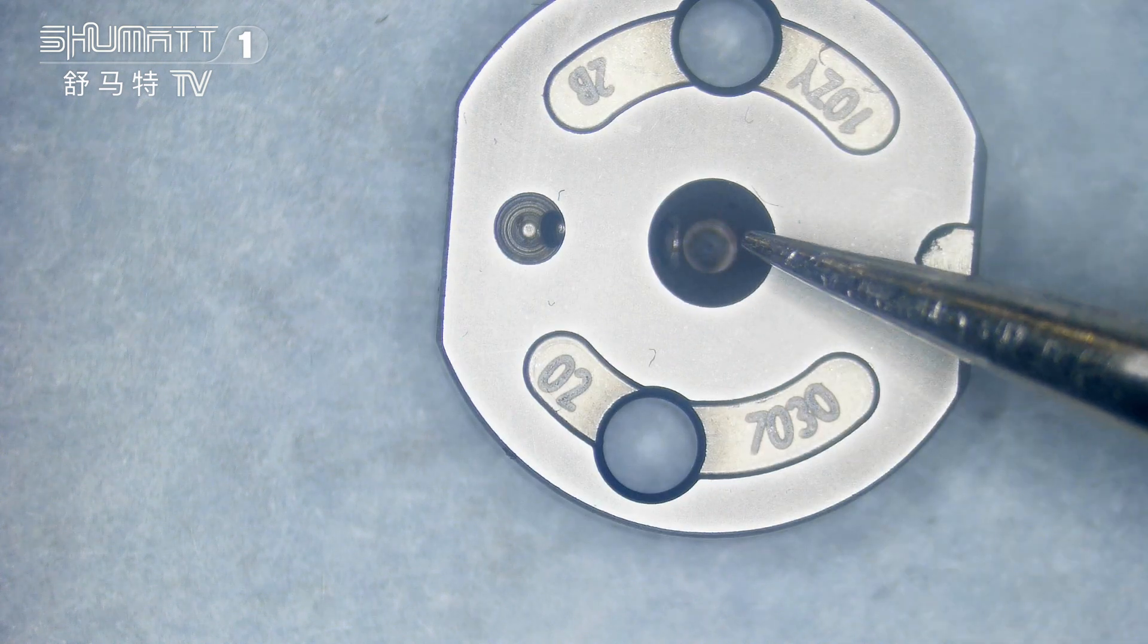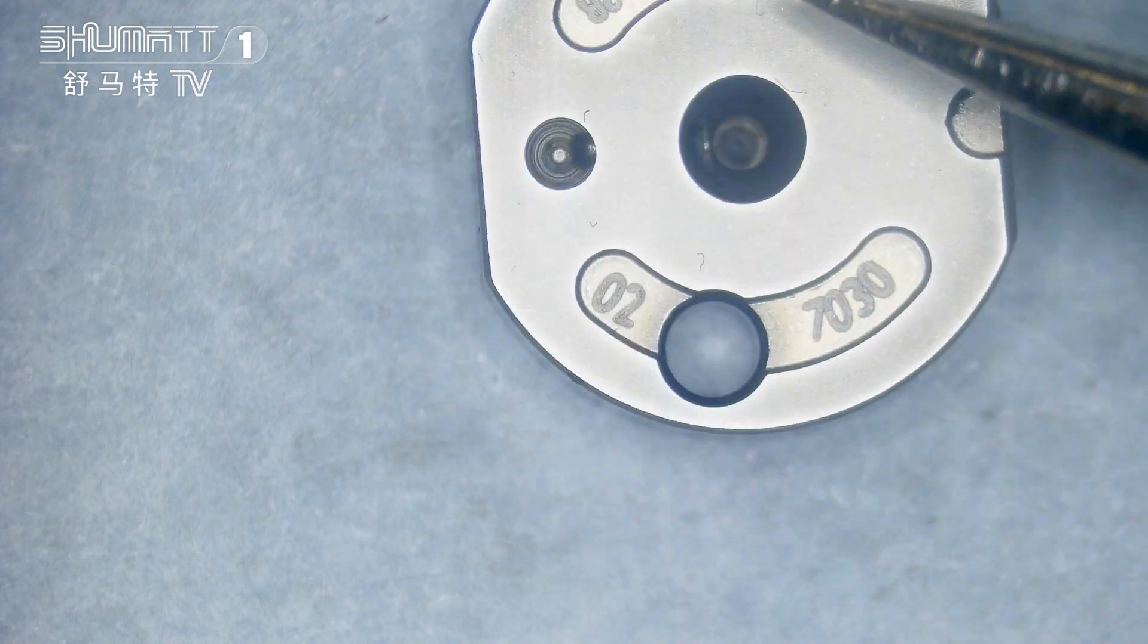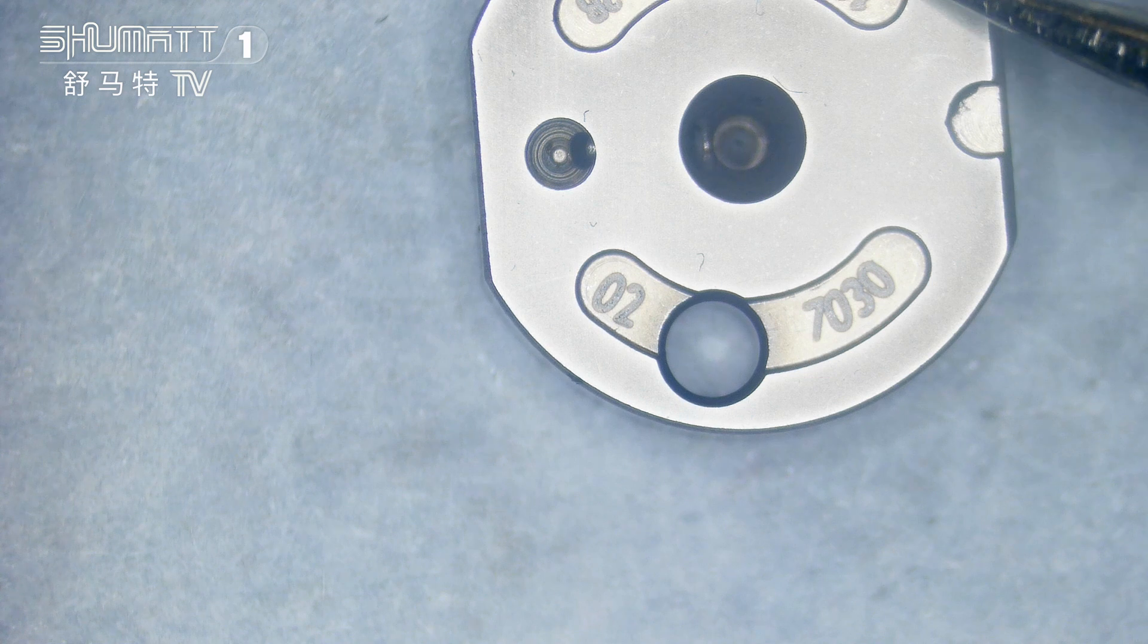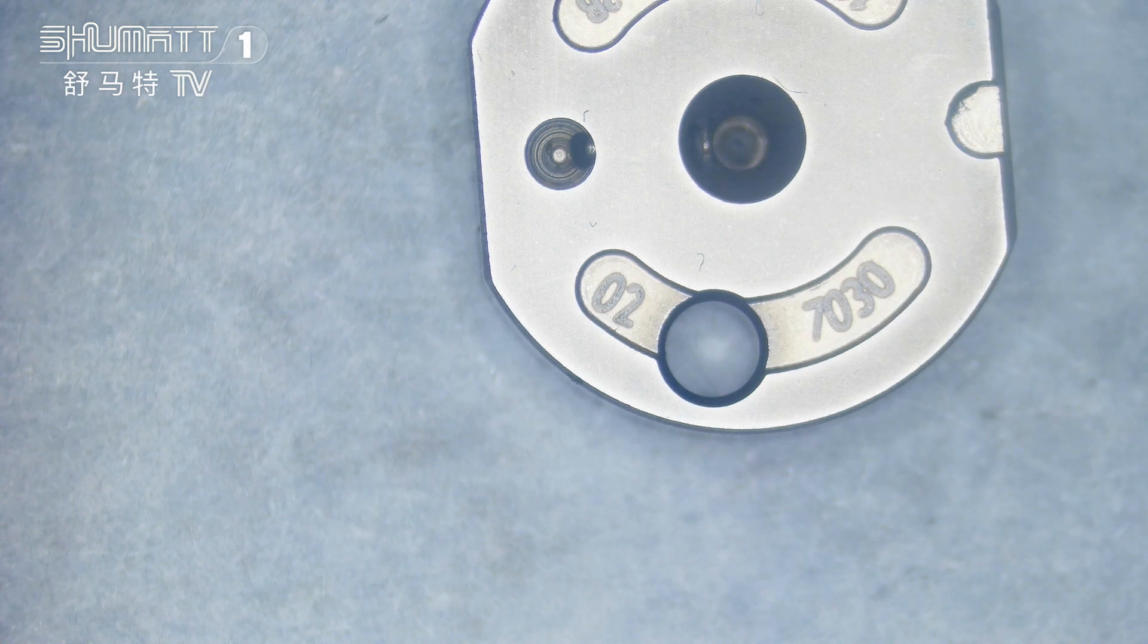In the middle part, that's the oil gallery. This is to stabilize the pin. The oil inlet on the surface, you can see the ink wave number 02.